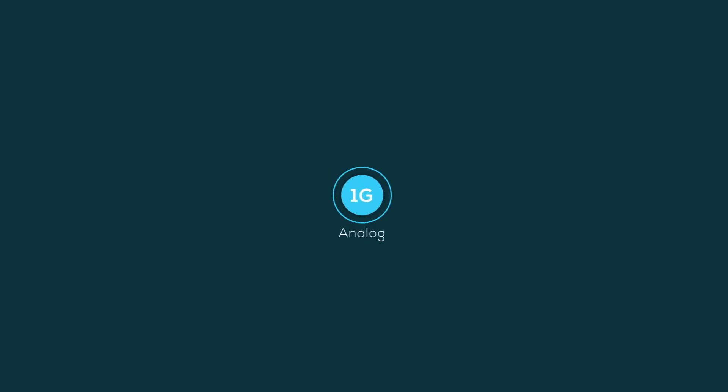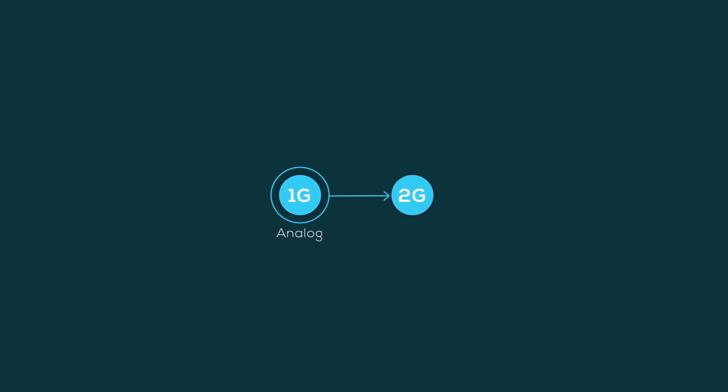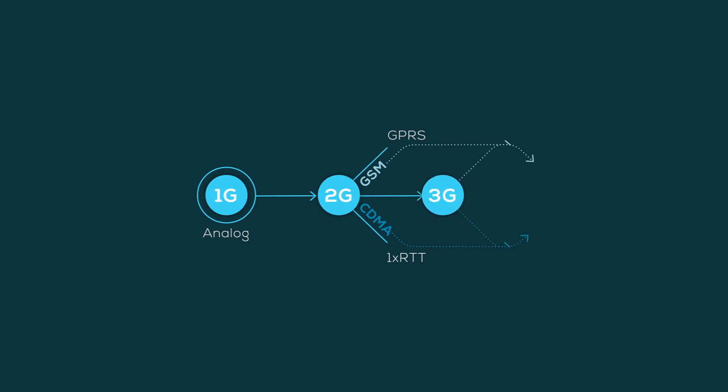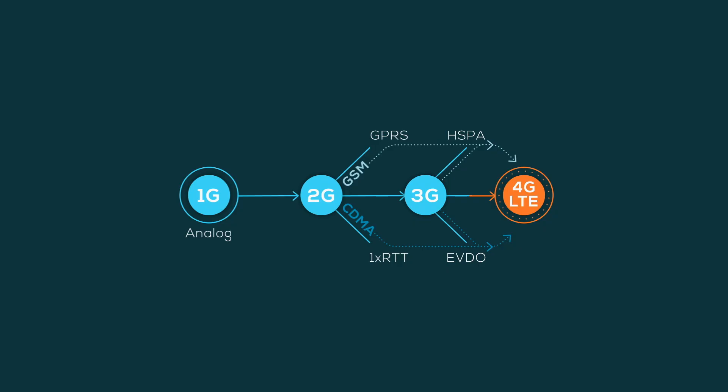First there was analog, or what you could call 1G. Then there was 2G, with CDMA and GSM. Then we moved to 3G, which was an evolution of CDMA and GSM — HSPA, UMTS, EVDO, and those types of things. But then we got to LTE, and at that point LTE was the one technology to rule them all. LTE was what everybody deployed, starting with LTE Category 3.